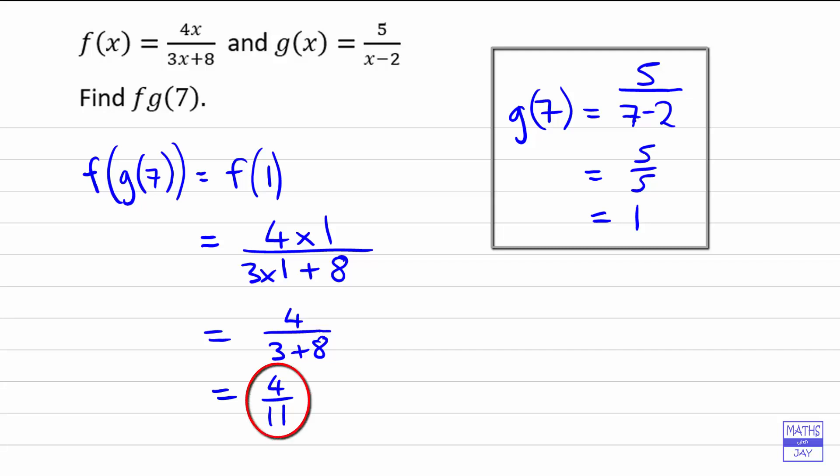So the really important thing here is at the very beginning to get this the right way round because if you do it the other way round if you find f of 7 first of all and then find g of that you will get a completely different answer.